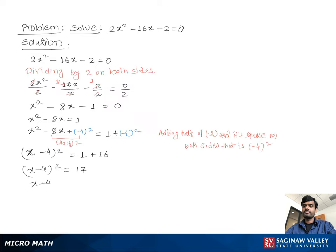Then we bring the square to the other side in the form of square root. So you can write x - 4 = ±√17.